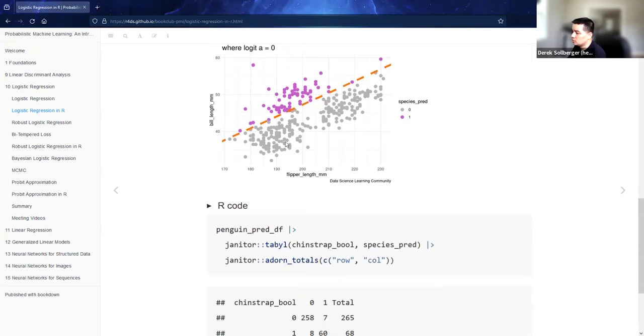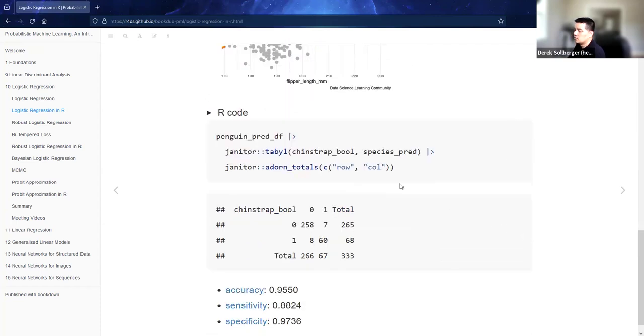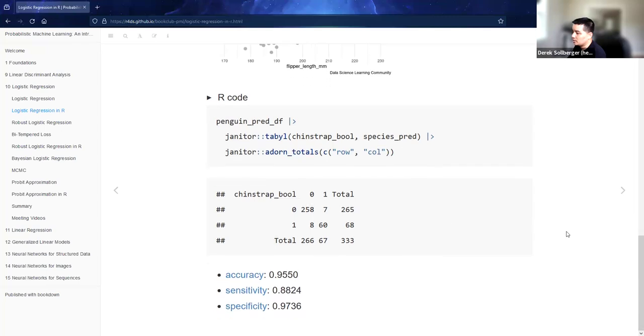When you do classifications like this, I've found that these pair of functions from the janitor package are useful for quickly counting up the notions such as true positives, true negatives, and so forth. And as you can see on the bottom of the screen, one had calculated that for this simple example, the accuracy is about 96 percent. Cool.